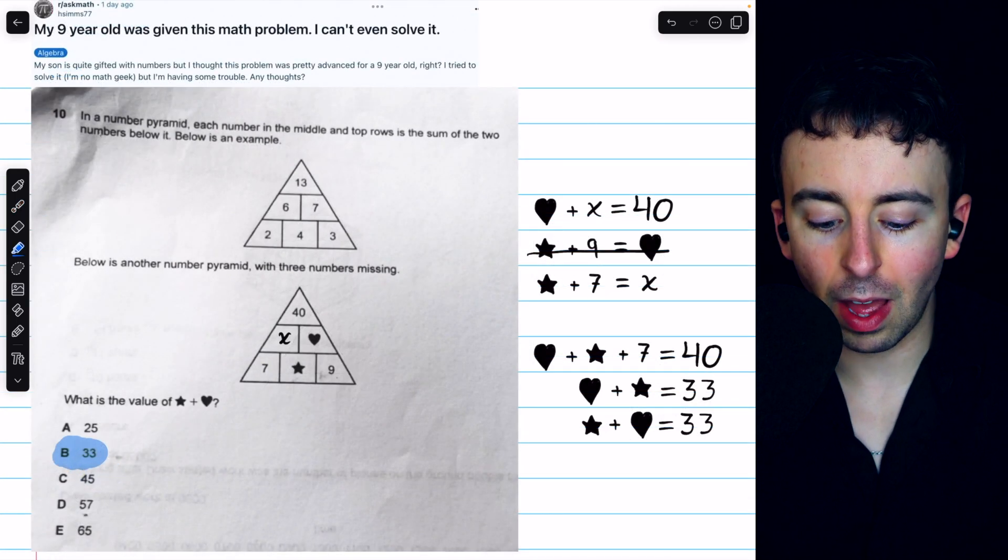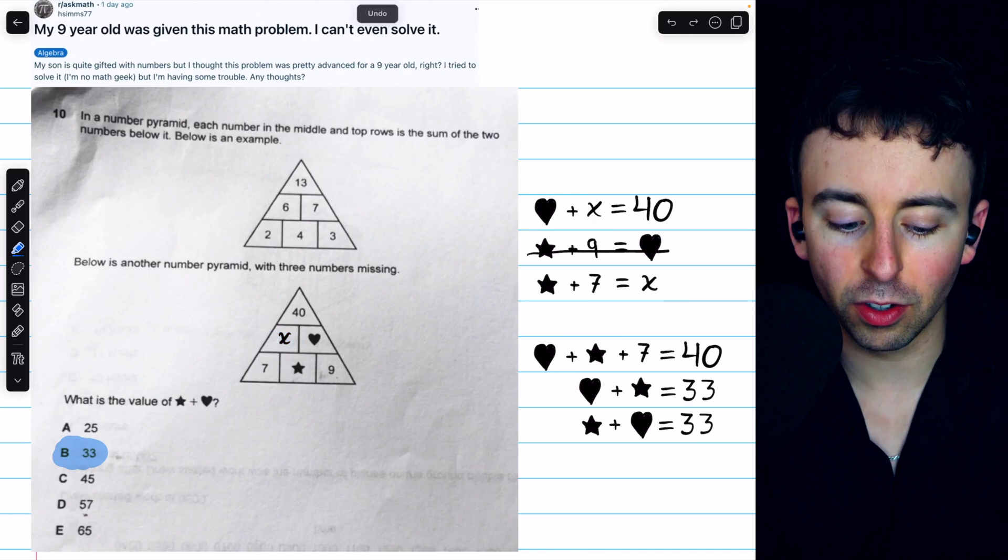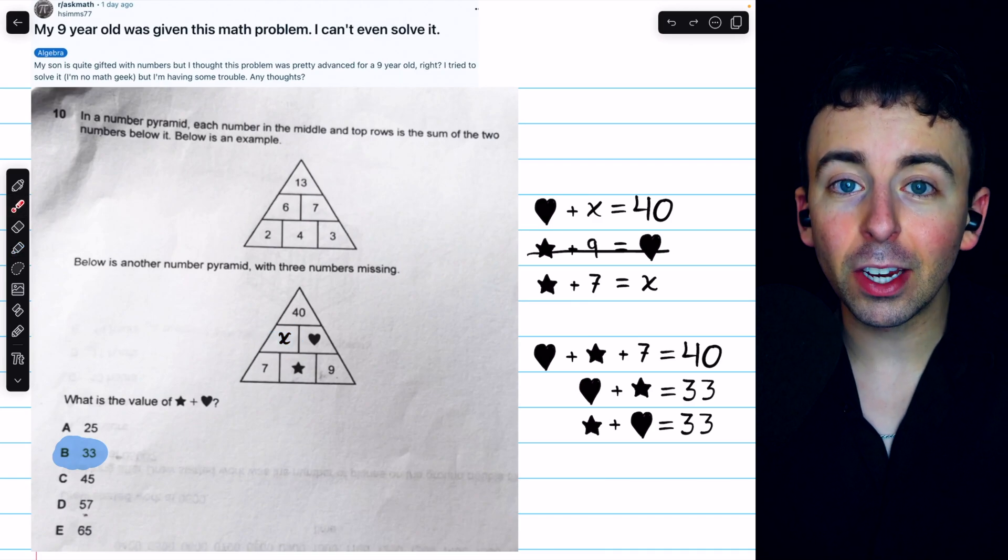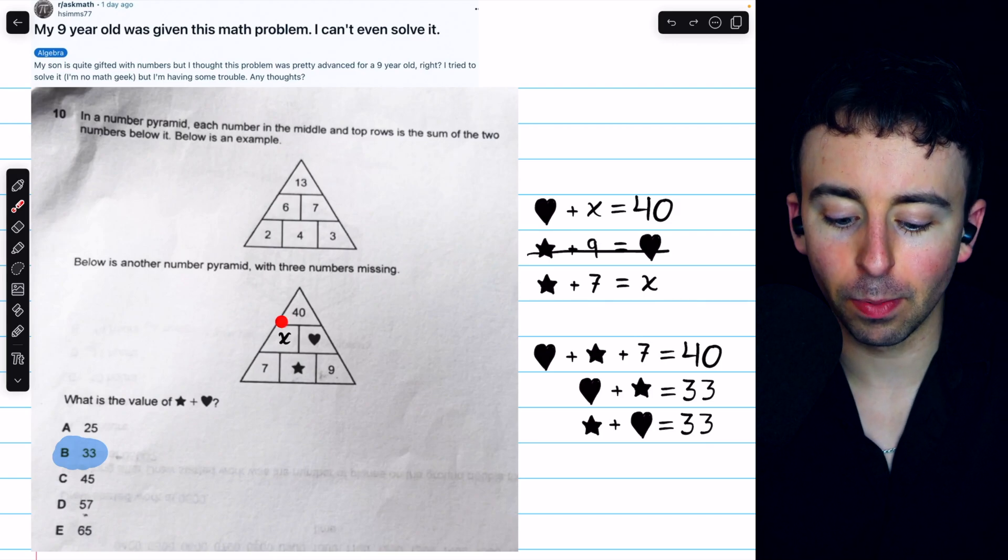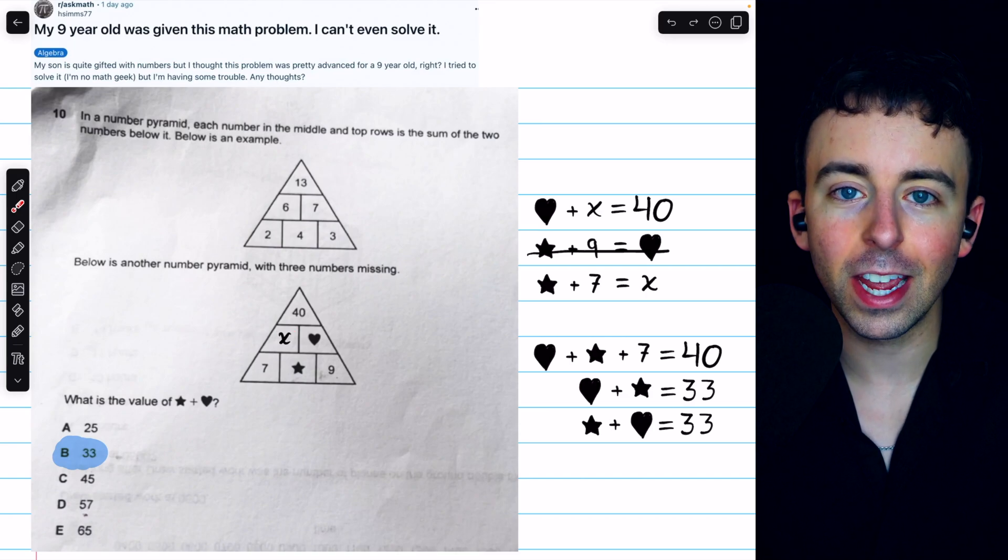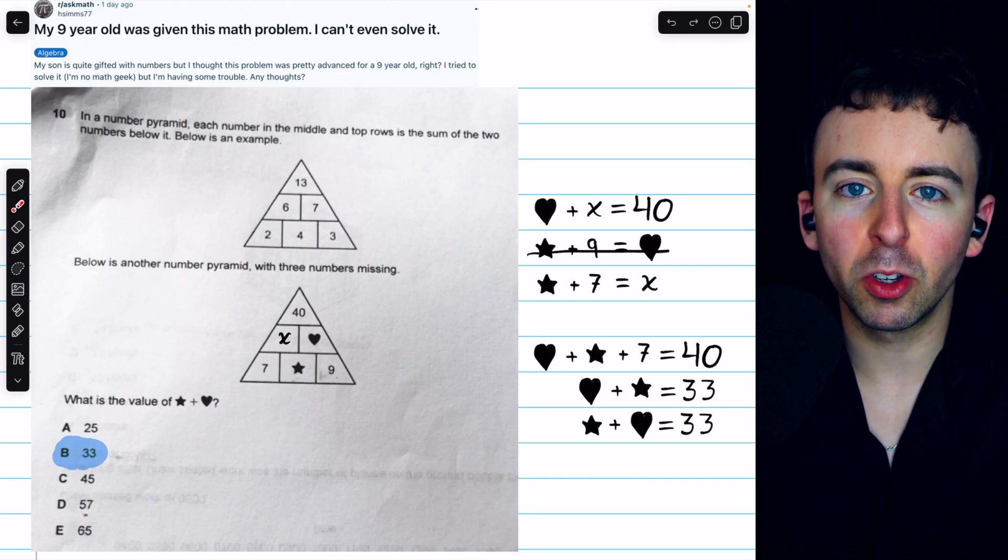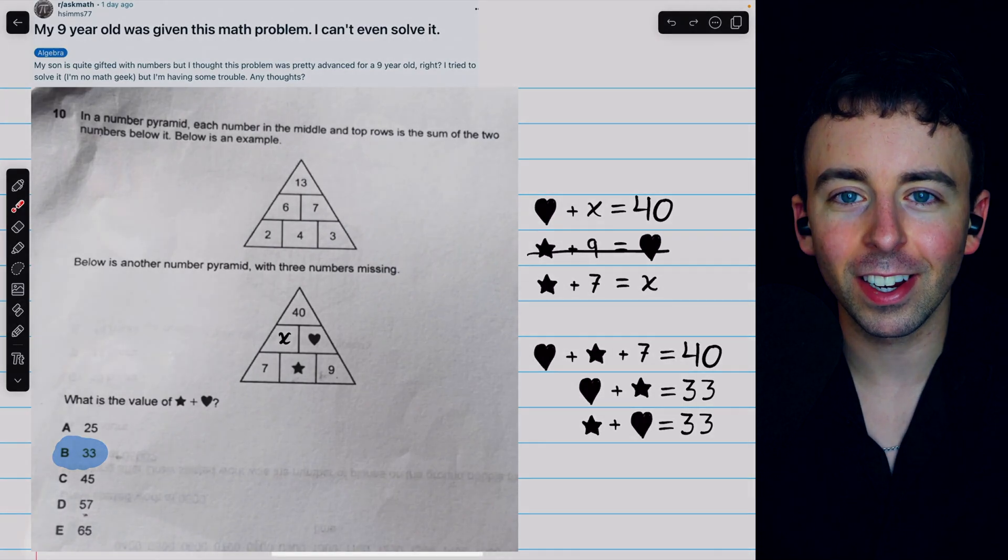There's also the obstacle of having this number which wasn't named. One of the most useful things you can do when you're starting a problem is make sure you name anything that's important. In this case, it was definitely important that we assign a name to this cell so that we can perform some math on it. But let me know what you think. Is this problem too hard or totally ridiculous to give to a nine-year-old? I'm not sure. Thanks for watching.